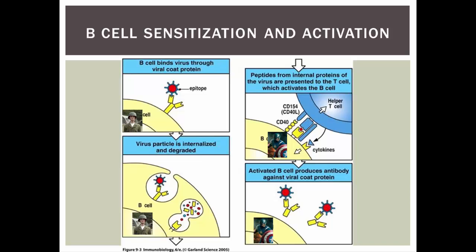Captain America is going to go off and either become plasma cells or become what are called memory cells. Memory cells just stick around and wait for the next infection — they're not really going to do anything. Whereas plasma cells start producing antibodies, and antibodies are weapons against foreign pathogens.